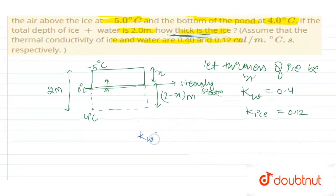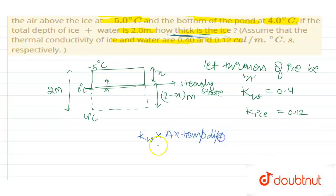The formula is: thermal conductivity of water times area times temperature difference, or temperature gradient, divided by thickness, that is 2 minus x.